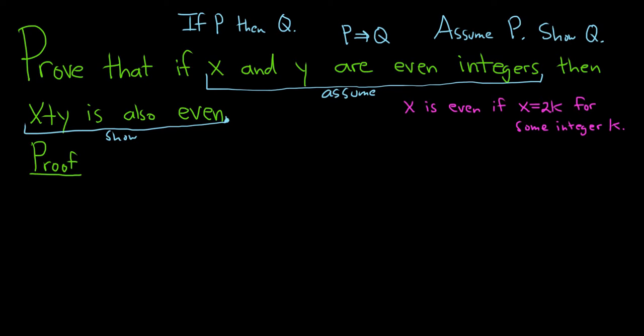So this goes both ways. This is really an if and only if statement. I wrote if because this is the definition. Definitions always go both ways, so even though it says if, it does go both ways. So if x is even, then x equals 2k for some integer k. If x equals 2k for some integer k, then x is even. That's what it means for an integer to be even.